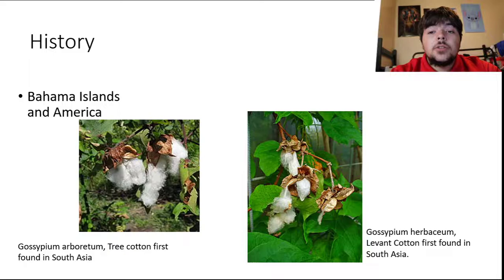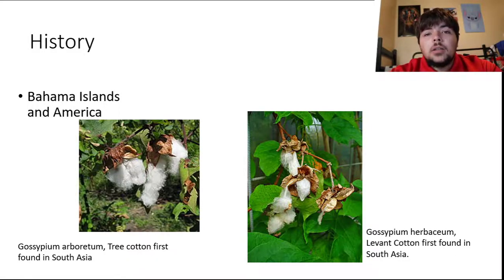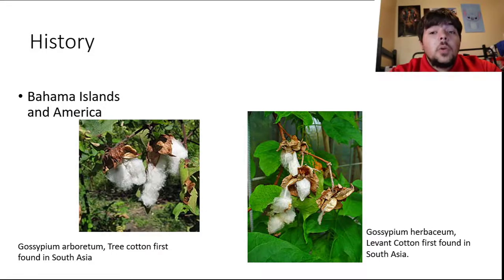Some of the history of cotton has it starting in South Asia with some varieties including tree cotton, shown on the left, and Levant cotton, shown on the right. When Columbus sailed across the ocean in 1492 he found cotton growing in the Bahama Islands. It would later be found that cotton was also growing in Central and South America.